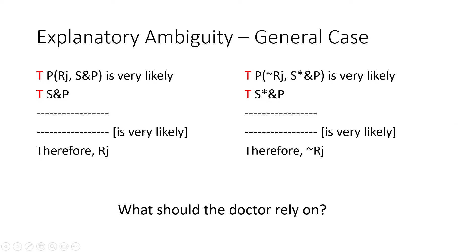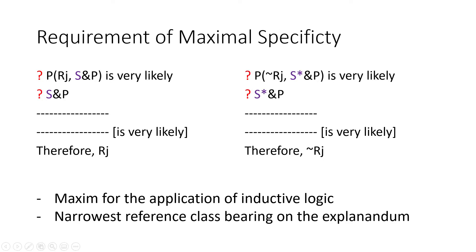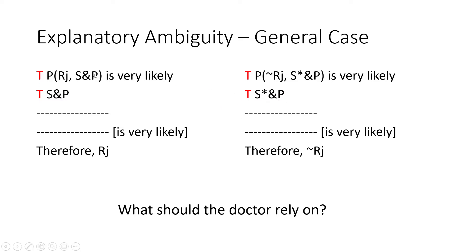What are we to do? Which one is the more likely answer? Which one should the doctor rely on when trying to predict the right course of treatment for a patient? The problem is that both explanations apply to John — he has streptococcus, but not just the general form, rather the specific penicillin-resistant strand — and the two give us different arguments. Part of that is due to the fact that we use separate or different reference classes.